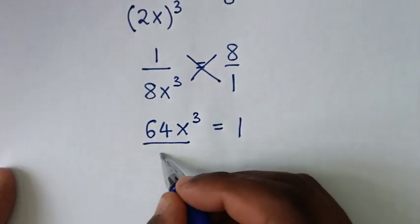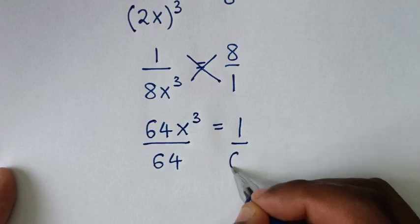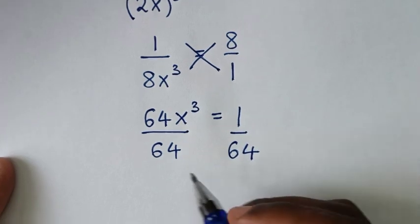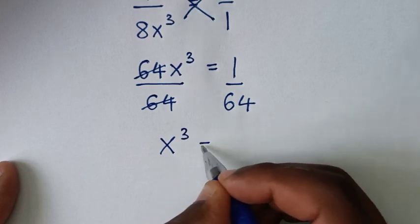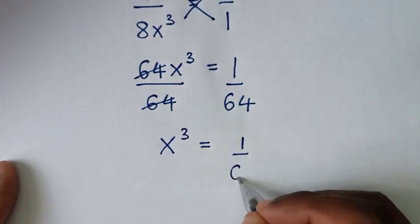Then we'll divide by 64 on both sides, so this and this will cancel. So it will be x^3 = 1/64.